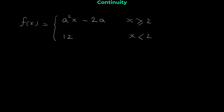Hello and welcome. In this video we want to do some questions about the continuity of a function. We are given this piecewise function: f(x) = a·(2x) - 2a if x is greater than or equal to 2, and f(x) = 12 when x is less than 2.